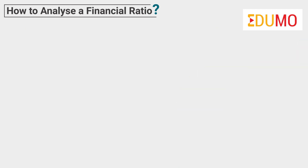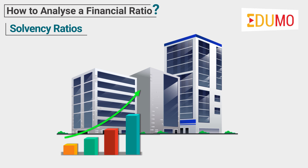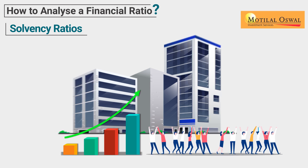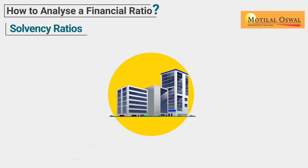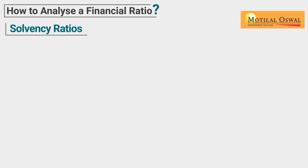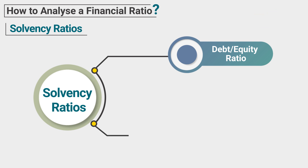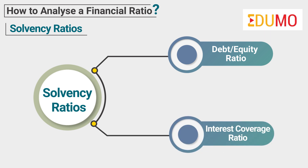Third is the solvency ratios. The solvency ratio is an important tool to measure a company's financial ability and strength. It basically shows whether the company has enough assets to pay off the borrowings or debt taken from external sources. Examples are debt-equity ratio, interest coverage ratio, etc.